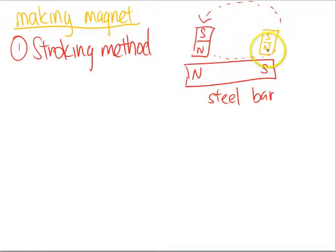What we can say here is the end of the magnetized steel bar, where the stroke finishes, will have an opposite polarity of the end of the magnet in contact. If there's a north pole here at the end before it leaves, it will become a south pole here for the steel bar.